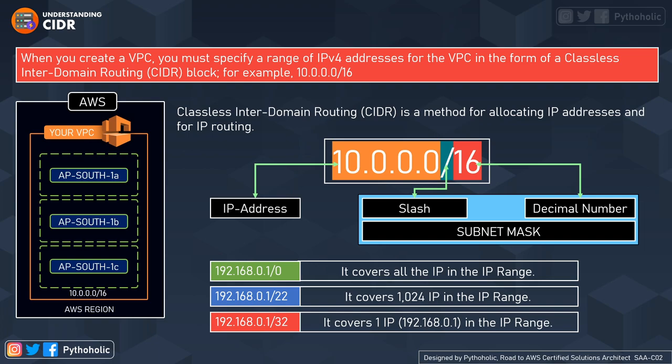When we create a VPC, we must specify a range of IPv4 addresses in the form of a CIDR block — that is, our Classless Inter-Domain Routing block — to tell AWS the block of network addresses we need as part of our VPC. CIDR is the method for allocating IP addresses and for IP routing. The value 10.0.0.1/16 is a CIDR block.